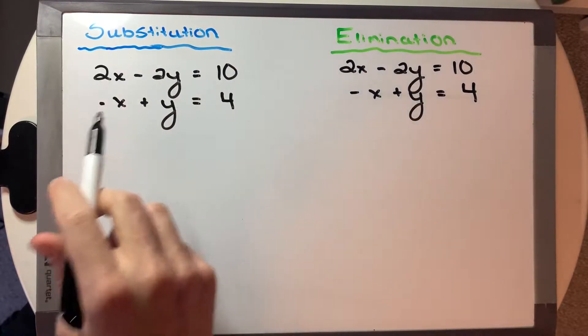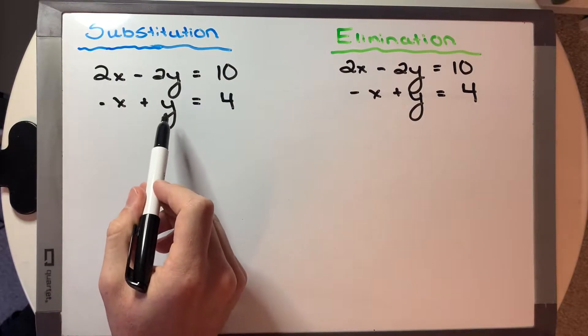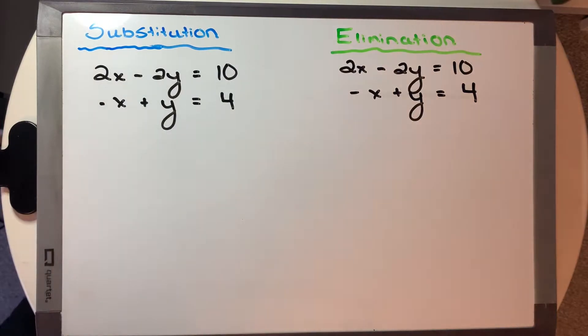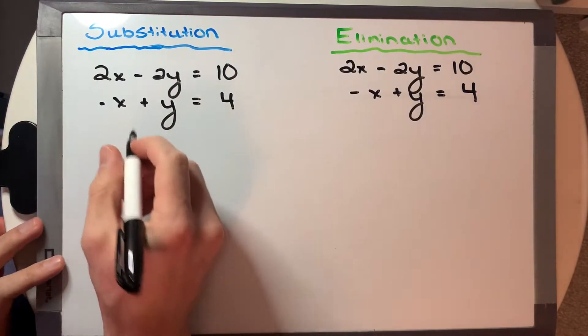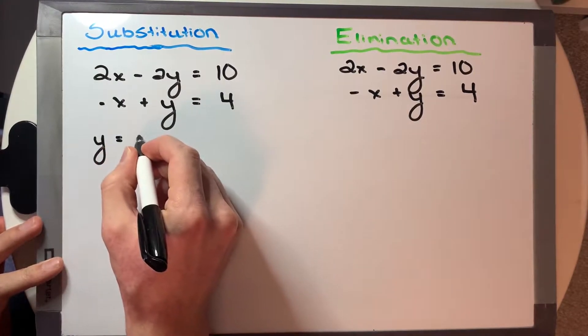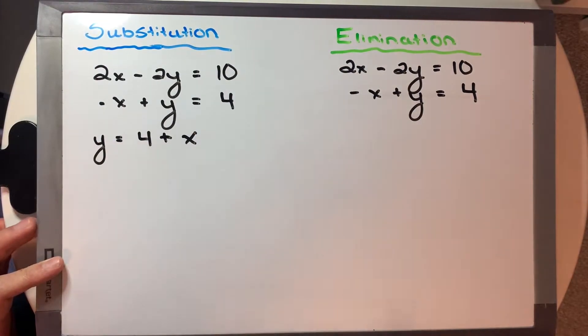So in this first problem here, let's start with our substitution side. We want to solve for one of the equations such that we get a variable alone that we can sub into the other equation. So for this one, I'm going to take that second equation and isolate y.